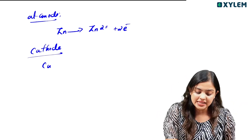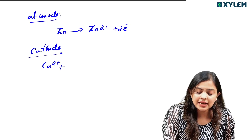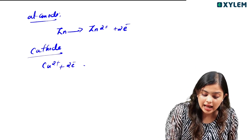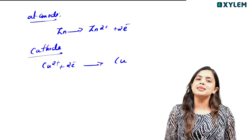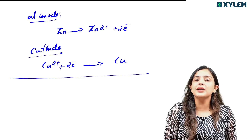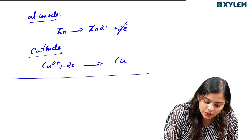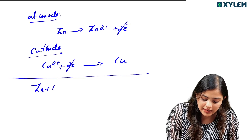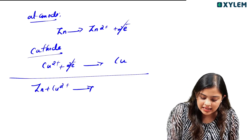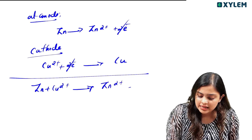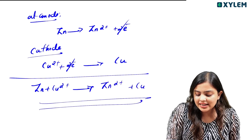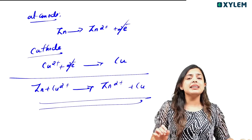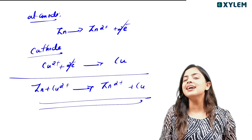Cu2+ ions combine with two electrons to form a copper atom. So Zn + Cu2+ gives Zn2+ + Cu. This is the equation for this galvanic cell — very important.